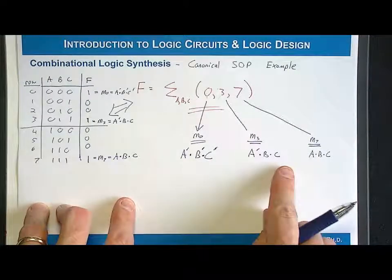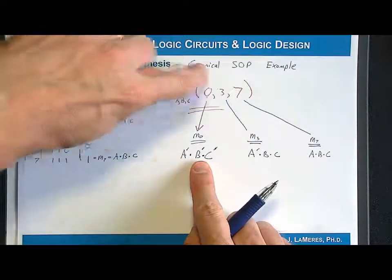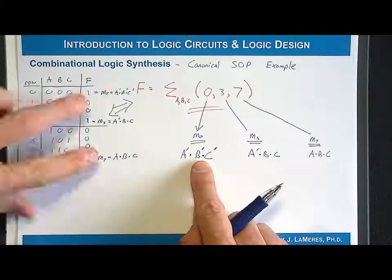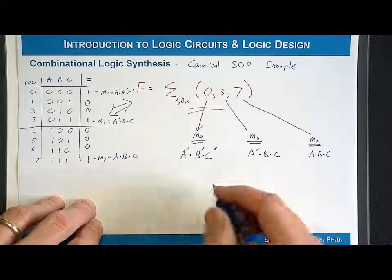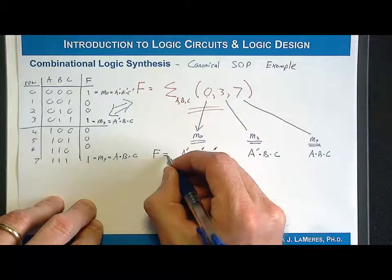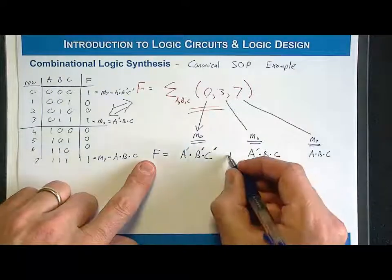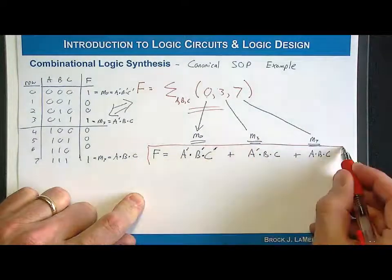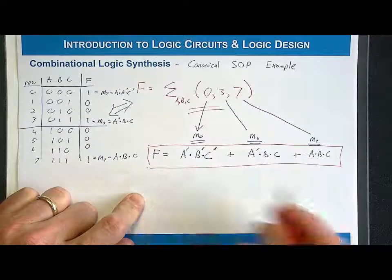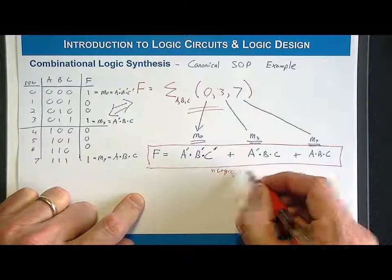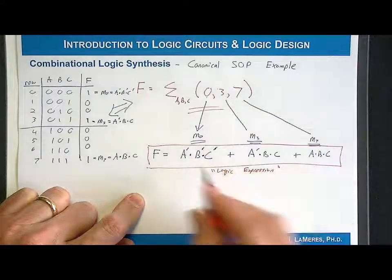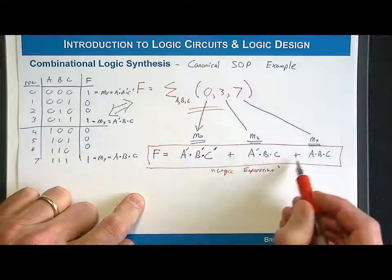I have my three inputs and my three minterms. They're going to produce ones for these three codes and only these three codes. The way I form a canonical sum of products is I simply take my minterms and OR them together. So F = A'B'C' + A'BC + ABC. I've now created the logic expression in canonical sum of products form — product terms that are summed together.